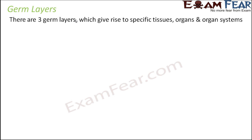What are germ layers? Germ layers are the primary layers of cells which are formed during embryo formation. They lead to the formation of tissues and organs like heart, kidneys, lungs, and stomach. All of these organs are formed from cells contained in these three primary layers called germ layers. This process of formation of various tissues and organs is known as organogenesis — genesis relates to formation, so it is called organogenesis.